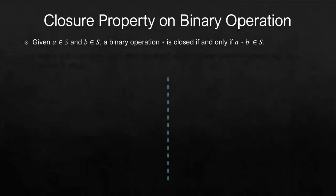Closure property states that if you're given with two elements of set S, those elements are A and B, and then you combine them using a certain binary operation, we can only say that that operation is closed under set S if the answer to that binary operation is also a member of set S.